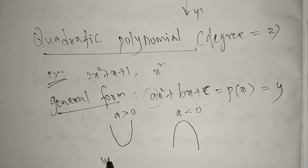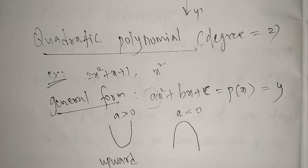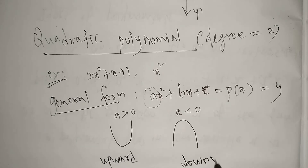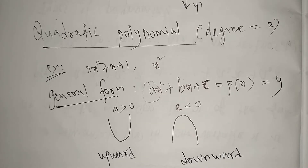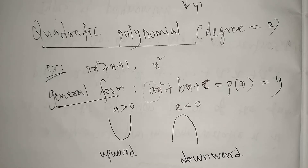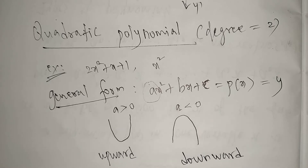When 'a' is less than zero, you get a downward curve. So: upward curve means a greater than zero; downward curve means a less than zero. These are the two types in 10th standard. Based on this, they may ask a one-mark question about the signs of a, b, c - it's very very important, so listen carefully.